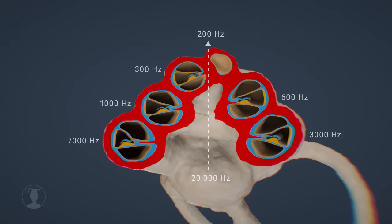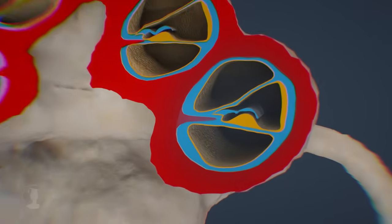How strongly the basilar membrane vibrates is measured by the inner hair cells, which are part of the organ of Corti.